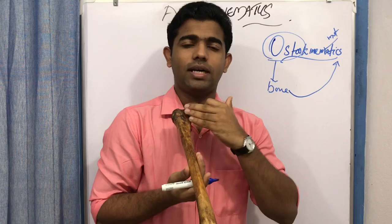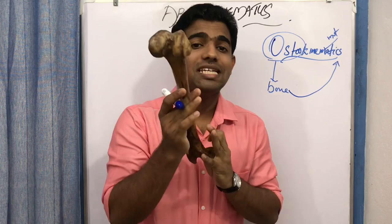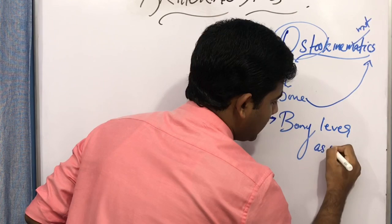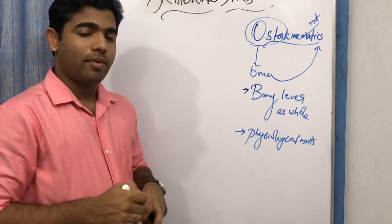For example, the femur can be considered as a long lever. When the femur moves, the entire motion of the femur — which is of course a physiological movement — is known as an osteokinematic movement. It is the movement of the bony lever as a whole.